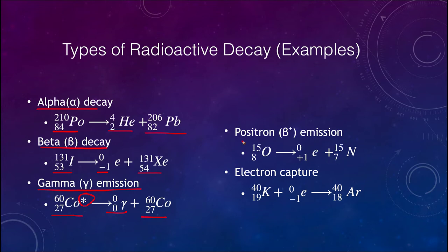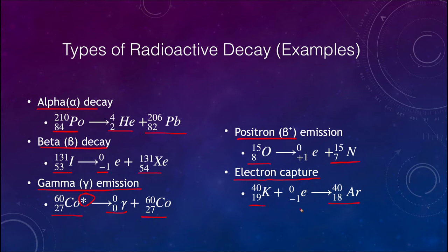For positron emission, oxygen-15 gives off a positron and becomes nitrogen-15. Everything balances: 15 mass units on each side, and 8 charges on the left equals 7 plus 1 on the right. For electron capture, potassium-40 becomes argon-40: 40 on the left equals 40 on the right, and 19 plus negative one on the left becomes 18 on the right — everything is balanced.